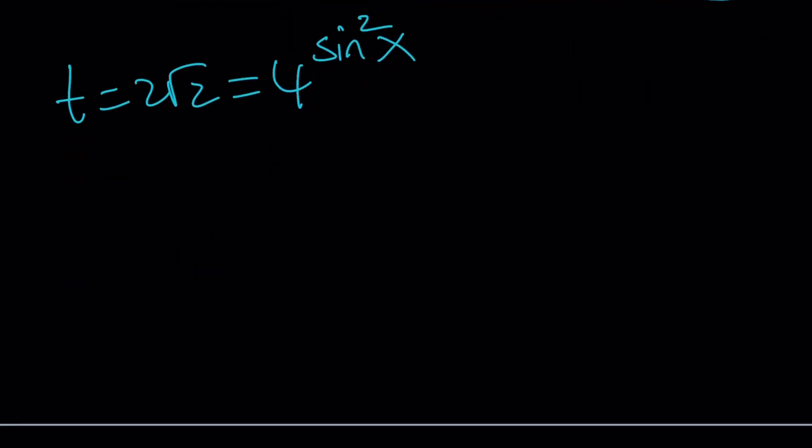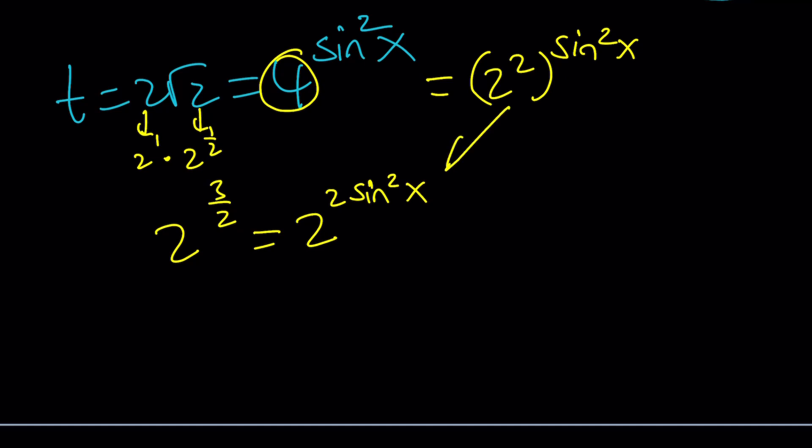Obviously, there are some rationals. And 4 to the power sine squared x can also be written as a power of 2. Awesome. Now let's go ahead and write this as follows. Because root 2 is 2 to the power 1 half, and this is just 2 to the power 1. Their product is going to be 2 to the power 3 halves. And 4 is 2 squared. So I can write this as 2 to the power 2 sine squared x. Does that make sense? If I skip this step, I apologize.